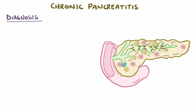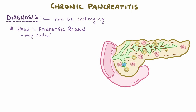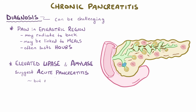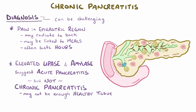Early diagnosis of chronic pancreatitis is challenging. People with chronic pancreatitis often have continuous or intense intermittent abdominal pain in the epigastric region that sometimes radiates to the back. This pain may or may not be linked to eating meals, and it tends to last for at least several hours. Even though elevated lipase and amylase levels are suggestive of acute pancreatitis, in chronic pancreatitis there may not be enough healthy pancreatic tissue to make those enzymes, so they may or may not be elevated.